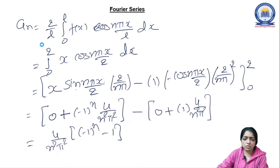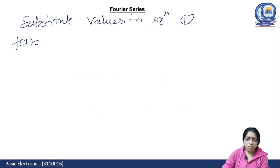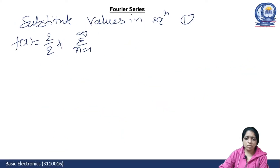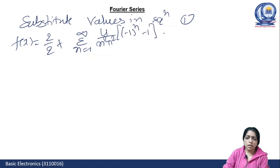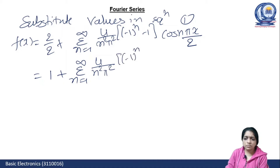Substituting values into equation 1: f(x) = 2/2 + summation n=1 to infinity of [4/(n²π²) · ((−1)ⁿ − 1)] · cos(nπx/2). The 2's cancel, giving f(x) = 1 + summation n=1 to infinity of [4/(n²π²) · ((−1)ⁿ − 1)] · cos(nπx/2). This is the half range cosine series for f(x) = x on [0, 2].